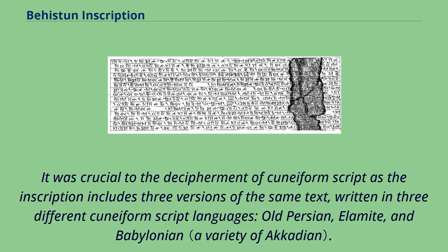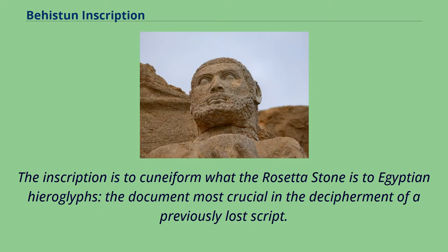It was crucial to the decipherment of cuneiform script, as the inscription includes three versions of the same text written in three different cuneiform script languages: Old Persian, Elamite, and Babylonian. The inscription is to cuneiform what the Rosetta Stone is to Egyptian hieroglyphs — a document most crucial in the decipherment of a previously lost script.